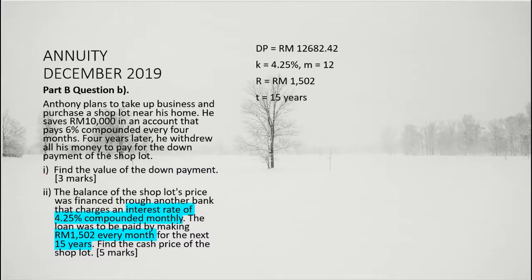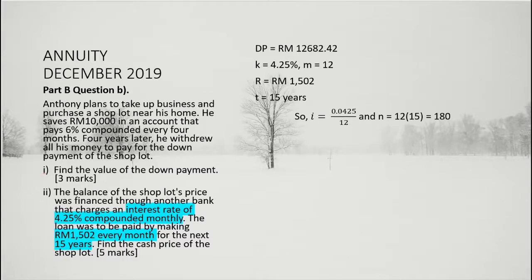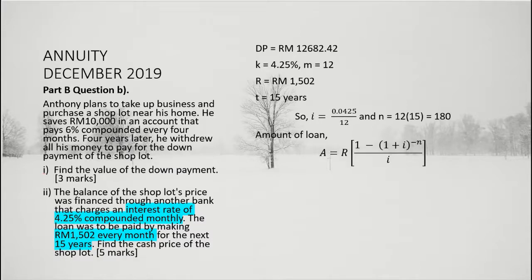So here we have the interest per period i equal to 0.0425 divided by 12, and the number of payments n equal to 180, which is obtained by multiplying 12 with 15. In order to find the cash price, we first need to find the amount of loan taken. Thus, here we need to use the present value of an annuity formula, since the loan is taken at present time.